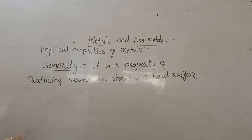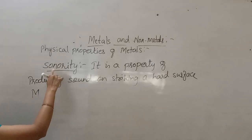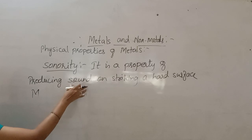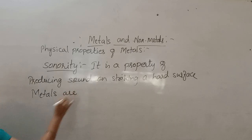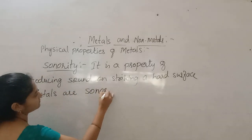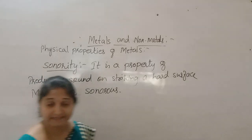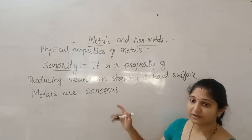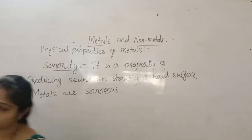That is the reason some metals are used for sound purposes, like in violin and sitar. Metals that produce sound when struck are called sonorous metals, and that property is known as sonority.